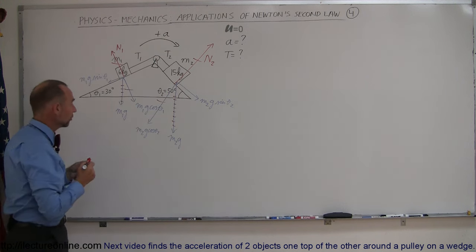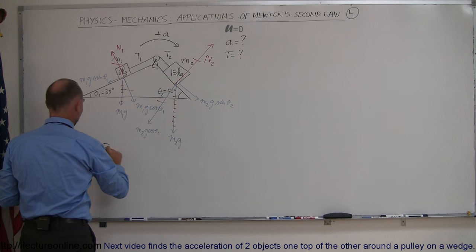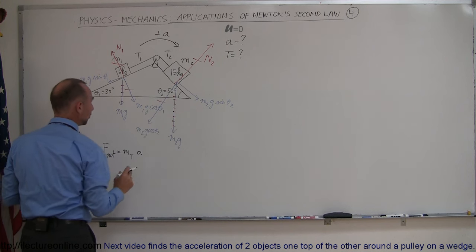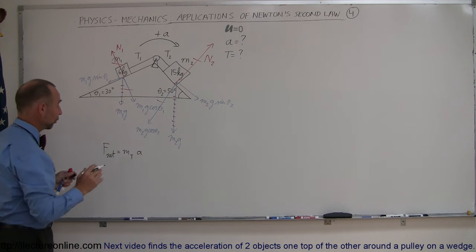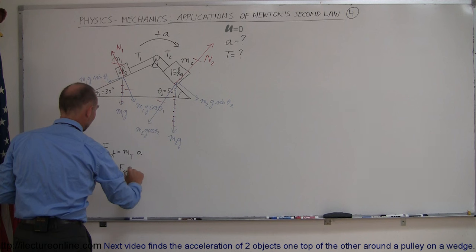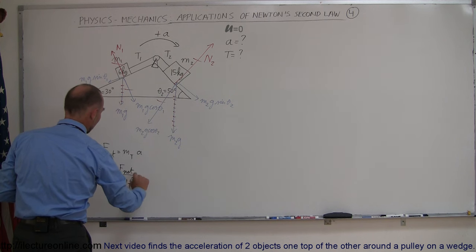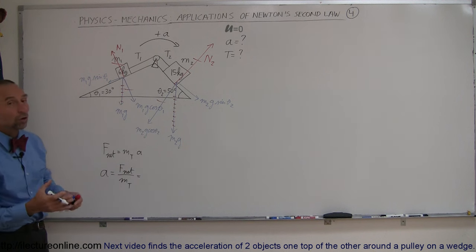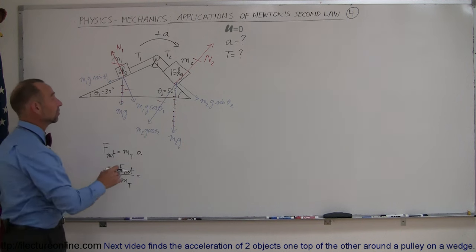Okay now I'm using Newton's second law that says F net is equal to mass total times acceleration, and then rearrange that equation to solve for A. A is equal to F net divided by m total, and the net force would be all the forces aiding the acceleration minus all the forces opposing the acceleration.